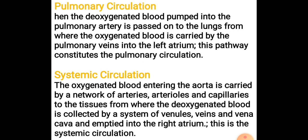First, let's talk about pulmonary circulation. Here, the deoxygenated blood is pumped into the pulmonary artery and passed on to the lungs. From the lungs, oxygenated blood is carried by the pulmonary veins to the left atrium. This pathway is known as pulmonary circulation, and it involves the pulmonary artery and vein.